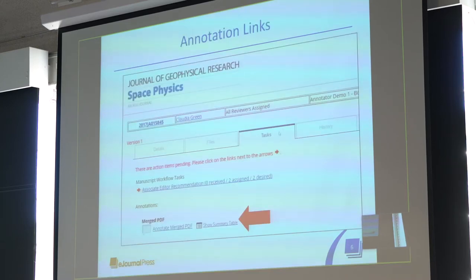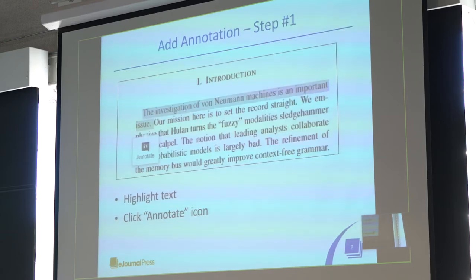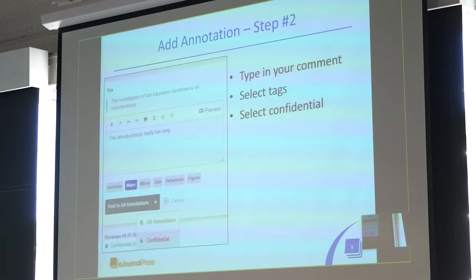Within our peer review system, there'll be a link to annotate the merged PDF and also show a summary table. When you click on the annotate link, we display the Hypothesis annotation tool and you can highlight a specific set of text. This is as if you were a reviewer wanting to mark up the manuscript. You click on the annotate button after you highlight text, and then the classical Hypothesis comments area will be displayed and you can type in your comment.